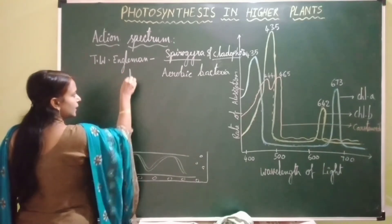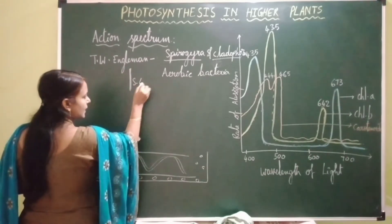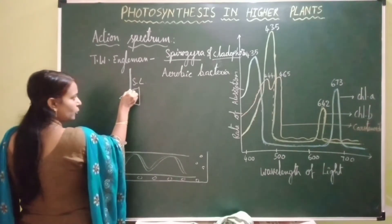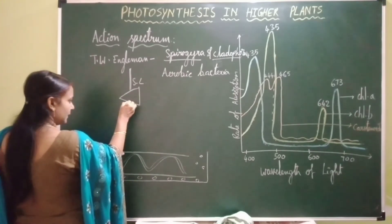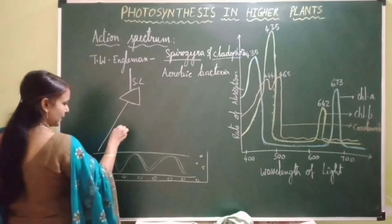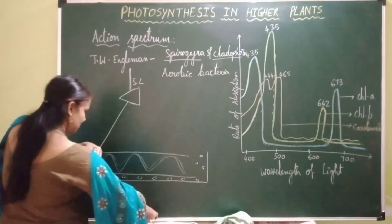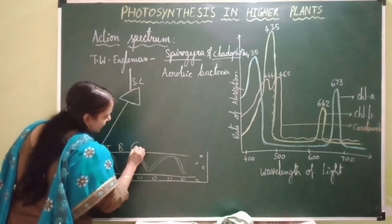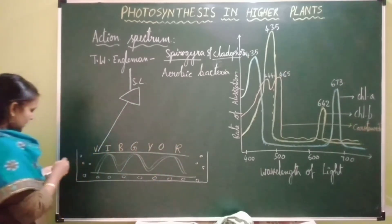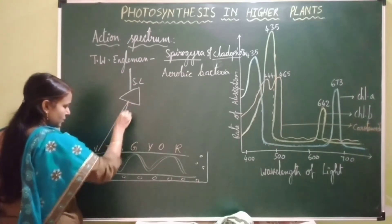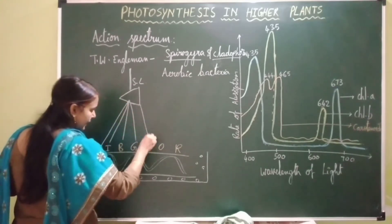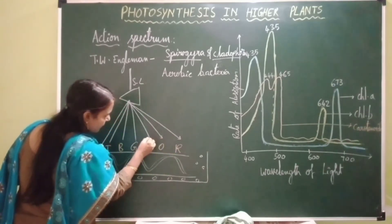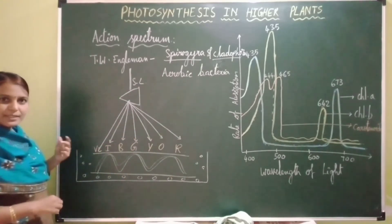He used incoming sunlight and passed it through a prism so that the sunlight split into its spectral components — that is violet, indigo, blue, green, yellow, orange, and red. All seven spectral components fell on the surface of this spirogyra.